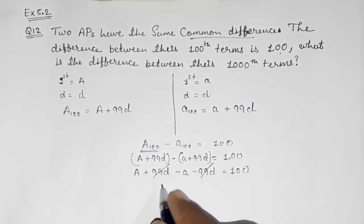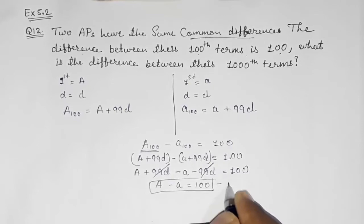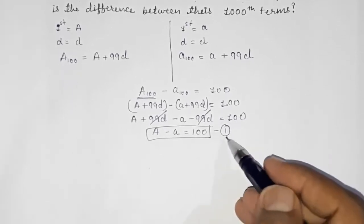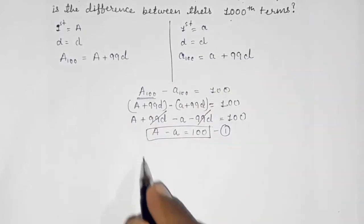Now we know the difference is same, so I am going to cancel it. A minus a is equal to 100. This is our result number one, because we are going to use this in finding our 1000th term difference.